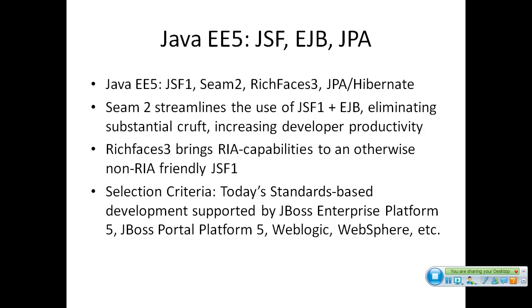Java EE5 embraced POJOs, annotations, dependency injection, and standardized JPA for object-relational mapping. In Java EE5, the stack is JSF 1, Seam 2, RichFaces 3, and JPA or Hibernate. Seam 2 was created to make JSF 1 and EJB programming vastly easier — increasing developer productivity, eliminating XML files, extra DTOs and managed beans. RichFaces 3 brings rich internet application capabilities to an otherwise non-RIA-friendly JSF 1, with about a hundred out-of-the-box Ajax-enabled JSF components.